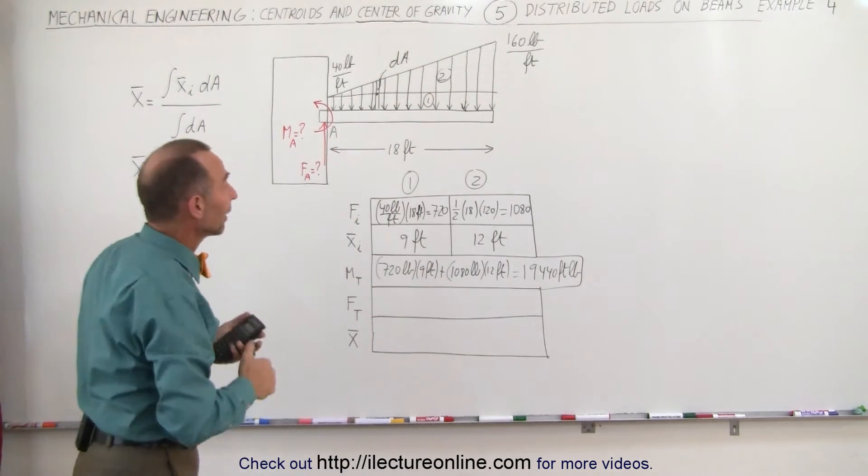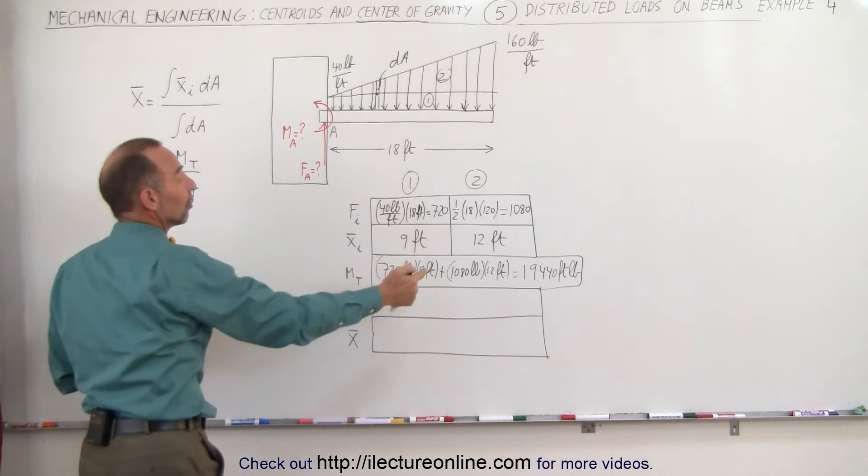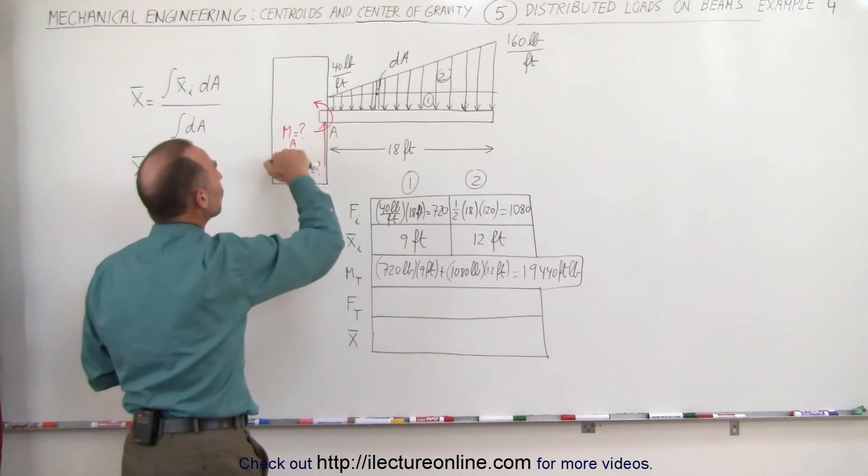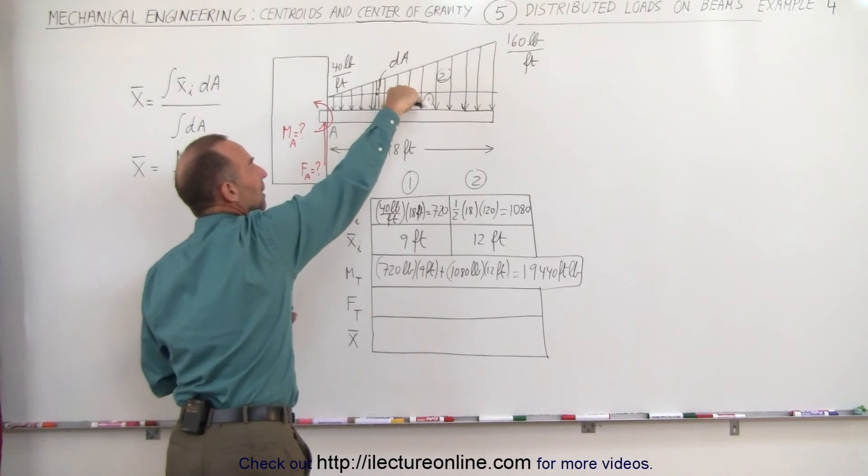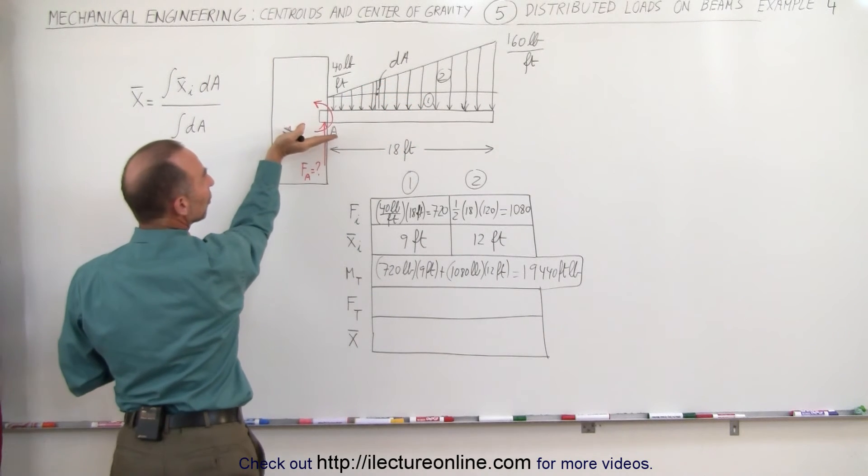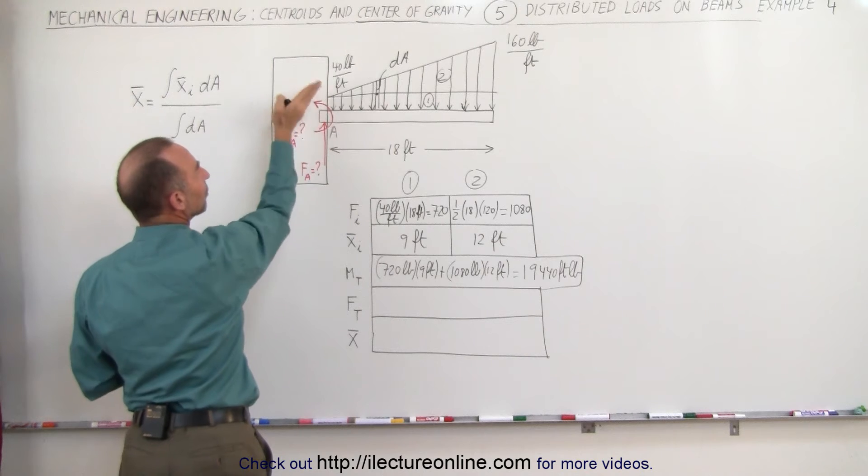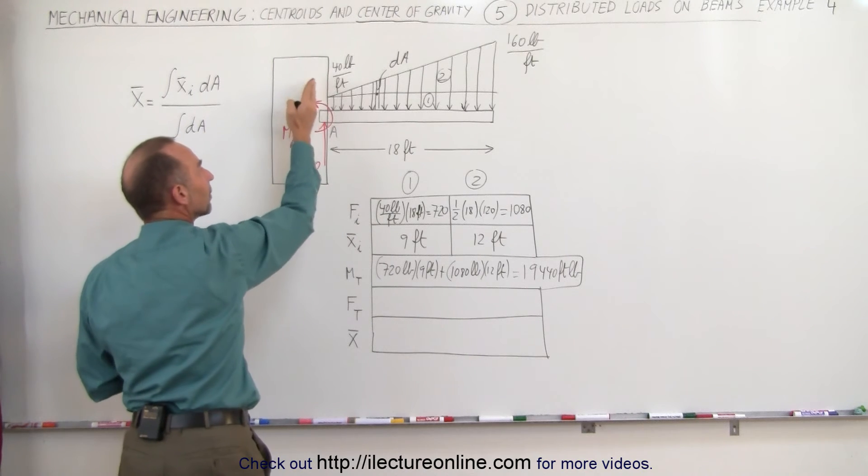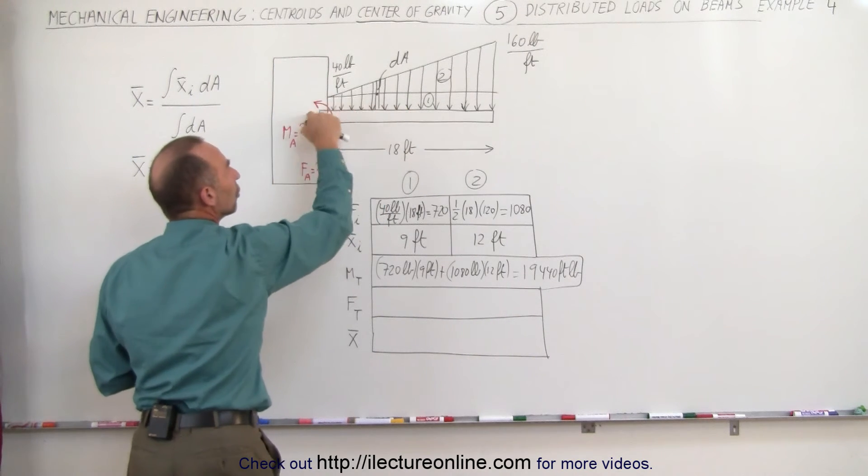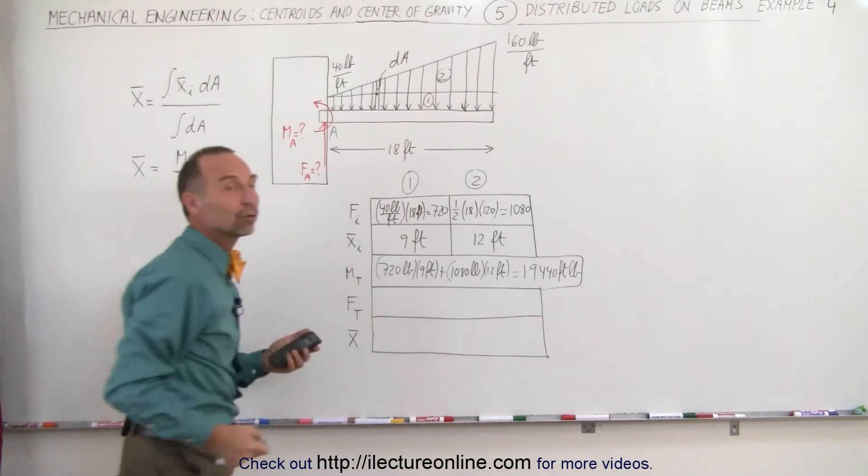We don't know yet where the centroid is, we'll find that in just a moment. That is of course also equal to the moment at A. We have to have a counterbalance here so as this beam is being pushed in this direction, the moment at A is holding that in the opposite direction, equaling out the moment caused by the force load acting through the centroid.